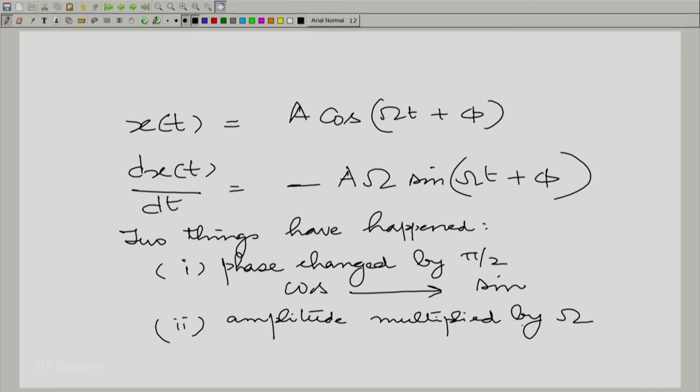So, it is very clear that when we differentiate a sine wave, a real sine wave, these two things do indeed happen. There is a phase change of 90 degrees and there is a multiplication of the amplitude by omega. Of course, it is very obvious that that happens when you differentiate e^(jωt). That is what this property is really saying.